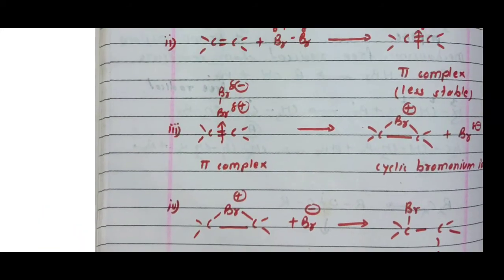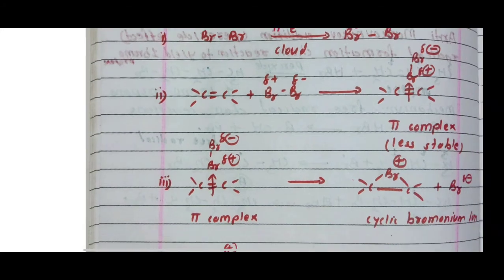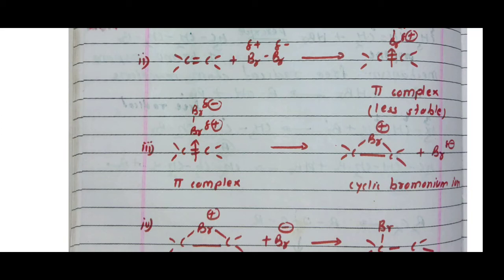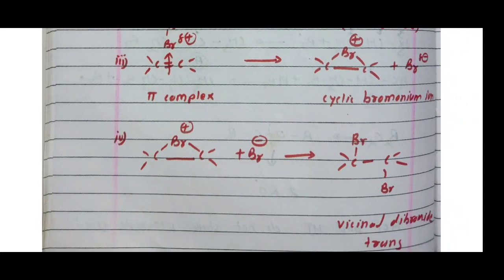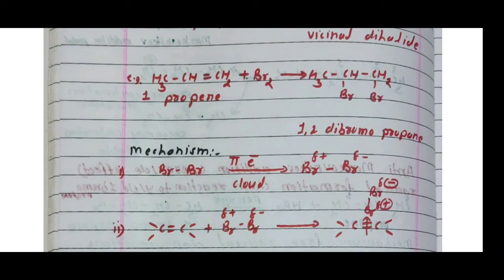Summary of the four steps: Step one — polarization of bromine molecule forming δ+ and δ− charges. Step two — polarized bromine attacks alkene forming the less stable pi complex. Step three — pi complex converts to cyclic bromonium ion. Step four — cyclic bromonium ion reacts with nucleophile Br⁻ to form trans-vicinal dihalide. So when ethene reacts with Br₂, 1,2-dibromoethane forms, and when propene reacts with Br₂, 1,2-dibromopropane forms.